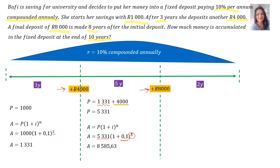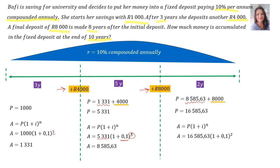Then another 8,000 rand was deposited. Therefore, P is the answer from the previous sum — 8,585 rand — plus the 8,000 rand deposited, so the new P = 16,585 rand and 63 cents. Into the formula A = P(1 + i)^n, with P = 16,585 rand, i = 0.1, and 2 years: slotting that into the calculator, the money accumulated in the fixed deposit at the end of 10 years is 20,068 rand and 61 cents.